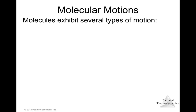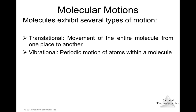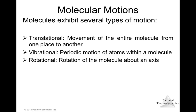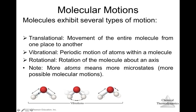Molecules exhibit several types of motion. Translational motion is the movement of the entire molecule from one place to another. Vibrational motion is the periodic motion of atoms within a molecule — for example, the hydrogen atoms in water can move closer to or farther from the oxygen atom. Rotational motion is the rotation of the molecule about an axis. These different modes of molecular motion all contribute to entropy.